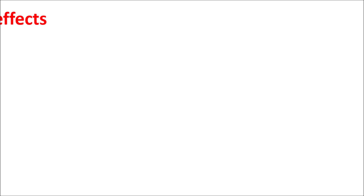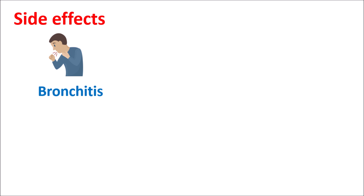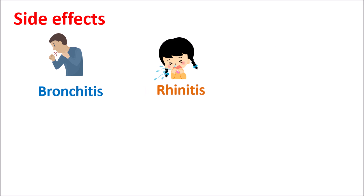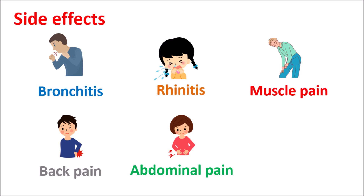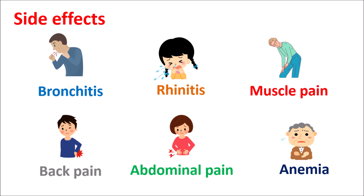Now let us see the side effects of this medication. Bempedoic acid mainly produces bronchitis and upper respiratory tract infections. It can also produce rhinitis, muscle pain, muscle spasm, back pain, abdominal pain and abdominal discomfort. It can increase the levels of uric acid resulting in gout. Similarly it can also produce some anemia leading to weakness.